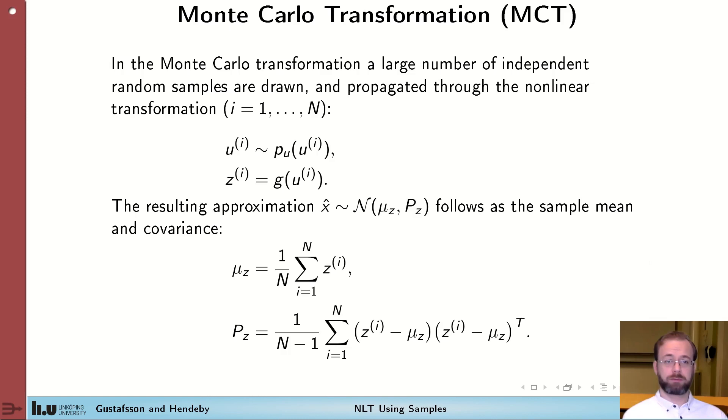The first method that we will study that deals with this is Monte Carlo transformations. The idea in Monte Carlo transformation is to pick a large number of random samples from the distribution of u and then transform them using the function g. And then compute the sample mean and the sample covariance based on these properties. These are all familiar expressions from statistical theory.